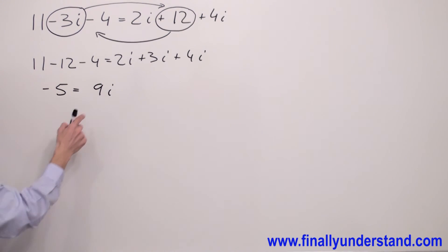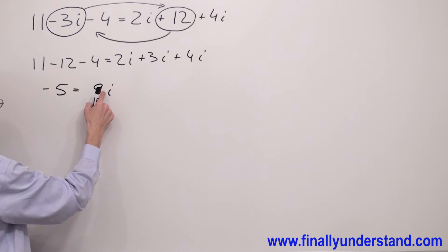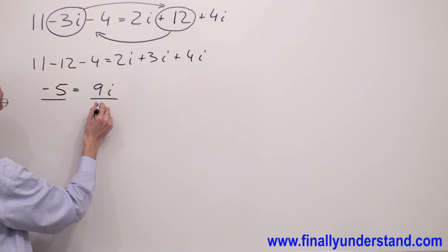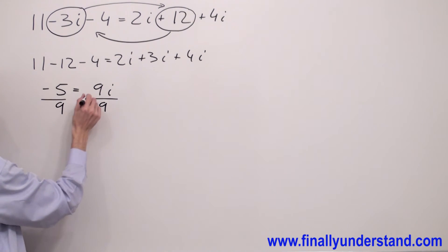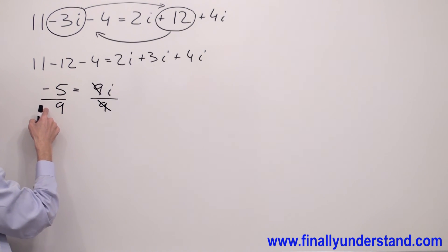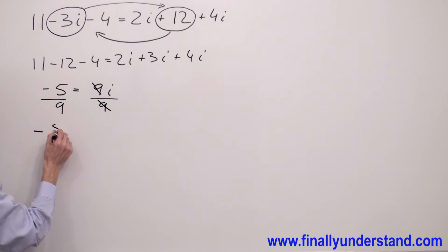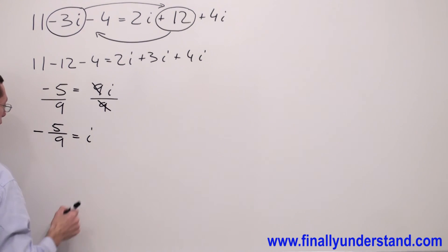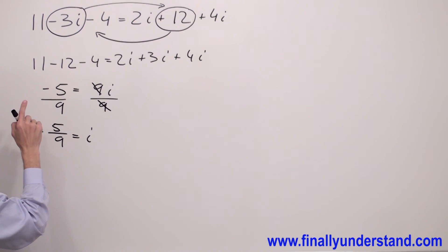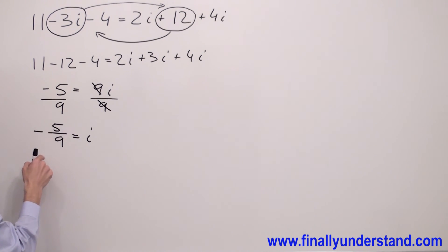In order to find the value of i, I need to eliminate the multiplication by dividing both sides of the equation by the number multiplied to i. In this case, I divide both sides by 9. The 9s cancel, and negative divided by invisible positive gives me negative 5 over 9 equals i. To check the answer, replace every single i in the original equation with negative 5 over 9. That is the solution to the problem.